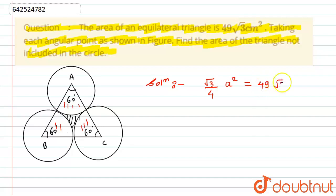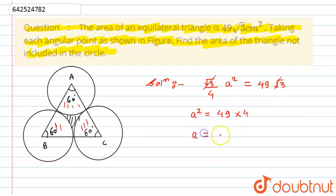Setting √3/4 × a² = 49√3, we get a² = 49 × 4 (since √3 cancels). Taking the square root of both sides gives a = 7 × 2 = 14 cm.